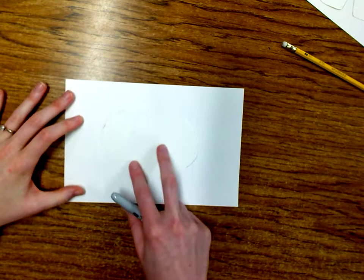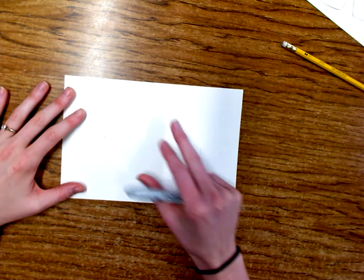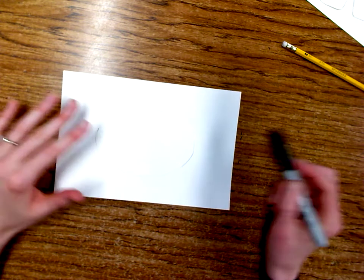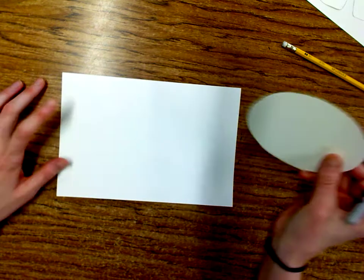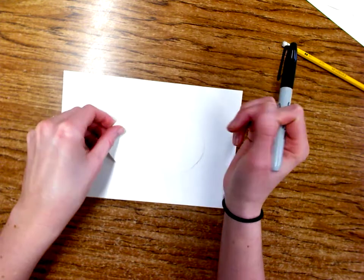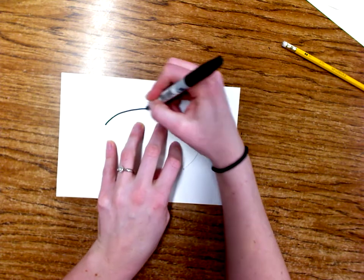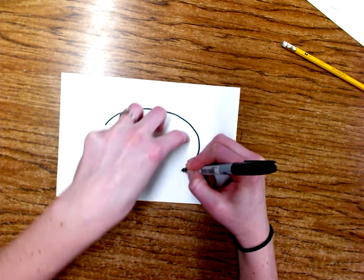Alright, today we're gonna be making a dinosaur. It's gonna be three-dimensional, which means it's going to stand up like our pattern pets that we made. I've got a piece of paper here and then I have a big oval and I'm gonna go ahead and trace that. That's gonna be my dinosaur's body, so I want to make sure I do it right in the middle.